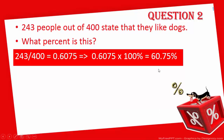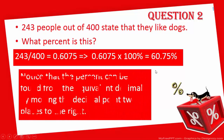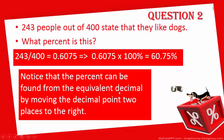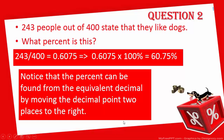As noted, percent can be found in two different ways: by multiplying the decimal by 100%, or by moving the decimal point two places to the right and placing the percent sign after it.